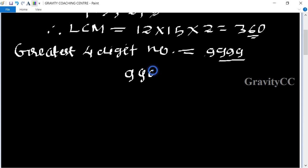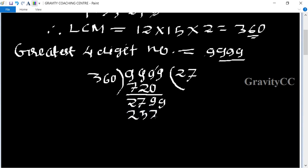9999 divided by 360. So first three digits: 360 into 2 equal to 720. 972. So 7 times it will become 2520. So the remainder is 279, which is the remainder.